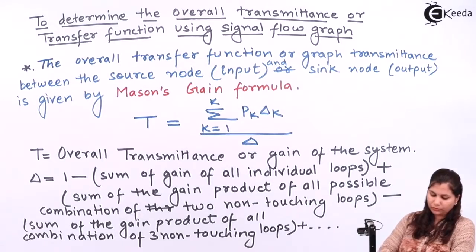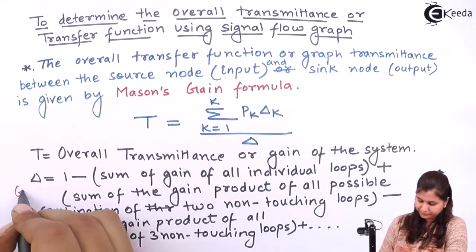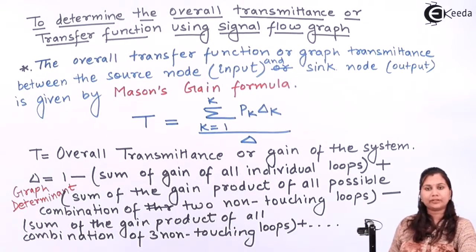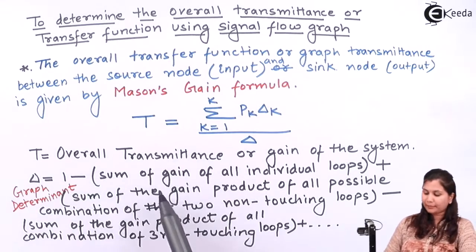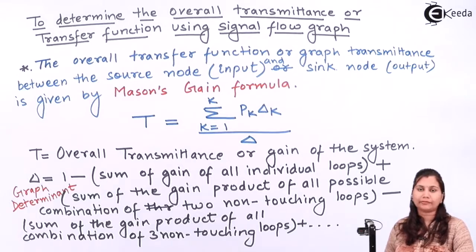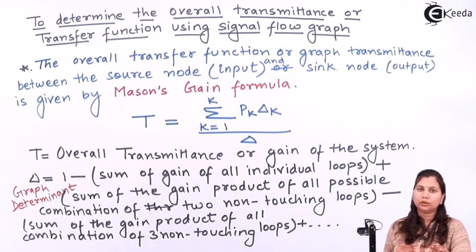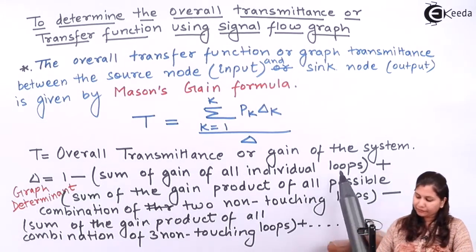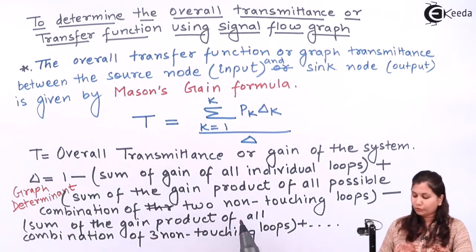This Δ is also known as the graph determinant. It is given by 1 minus the sum of gains of all individual loops present in the system as drawn in the signal flow graph. So just take the sum of the gain products of all individual loops — however many there are — and sum all those gains. After that, plus the sum of the gain products of all possible combinations of two non-touching loops.